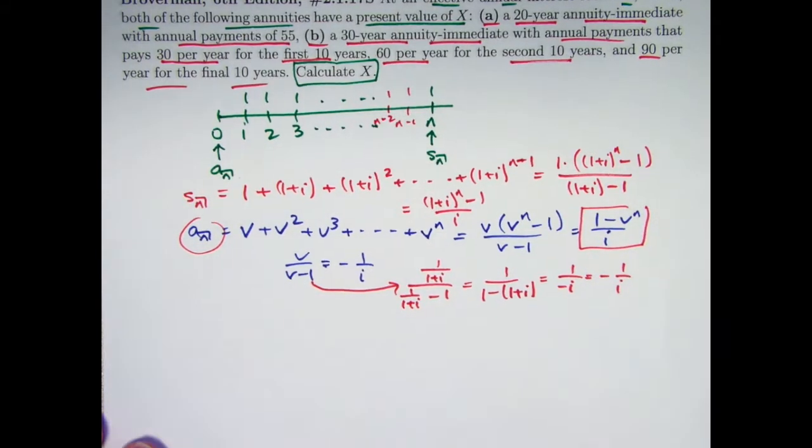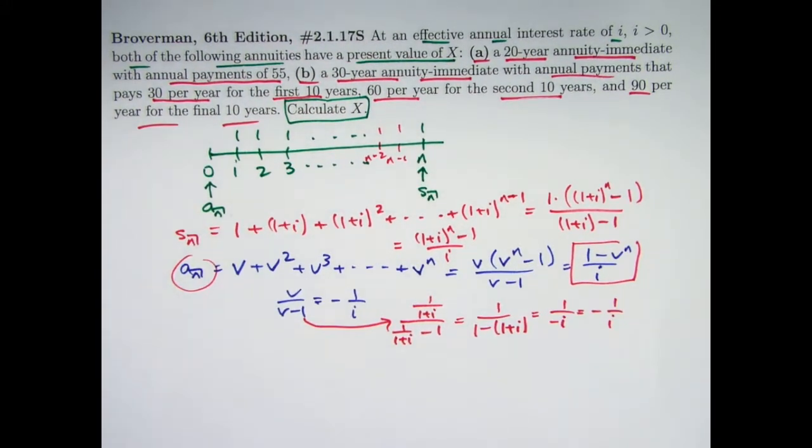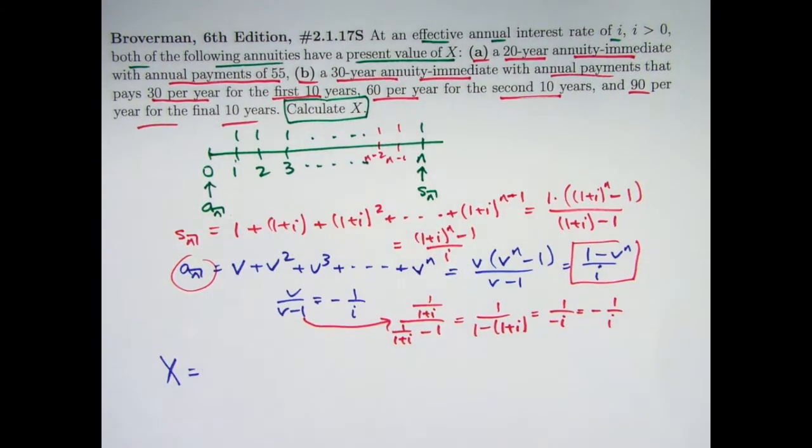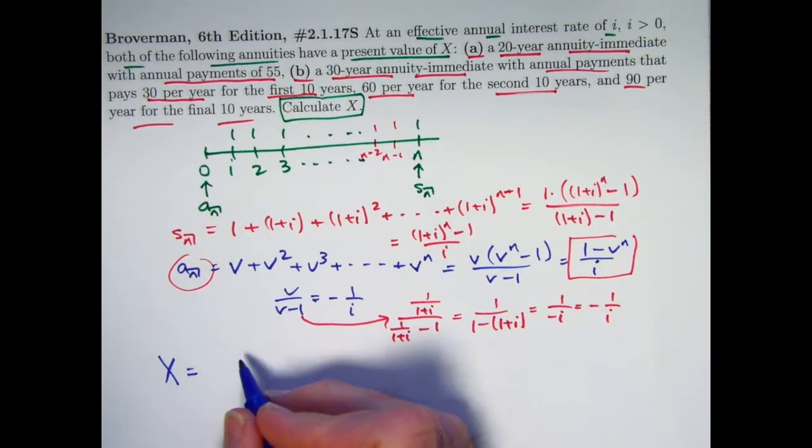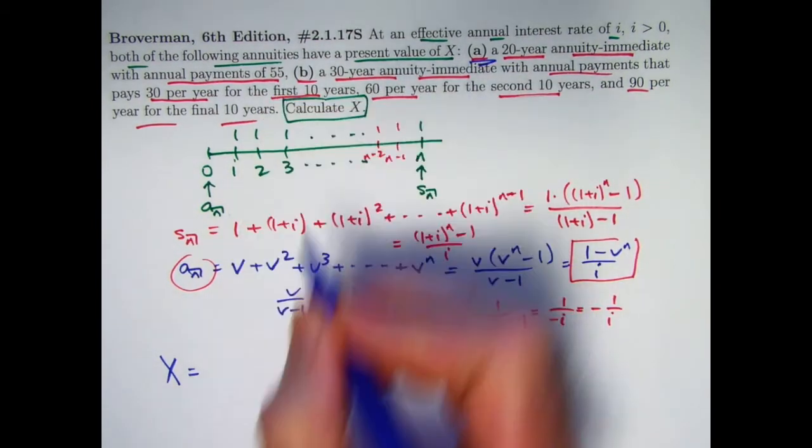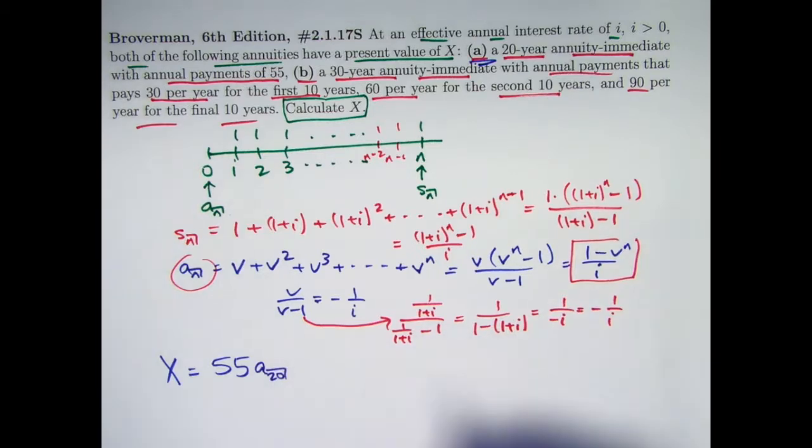Alright. So now I've derived those formulas. Let's go back and solve the problem now. We want to find X. That is going to be the present value of both of these annuity immediates. Focus first on A. Annual payments of 55. The present value of those 20 payments is going to be 55A_20.